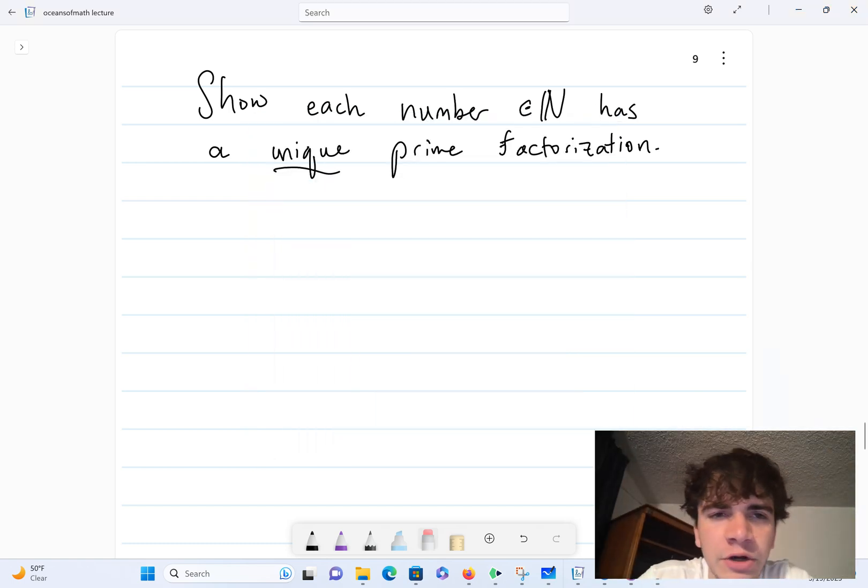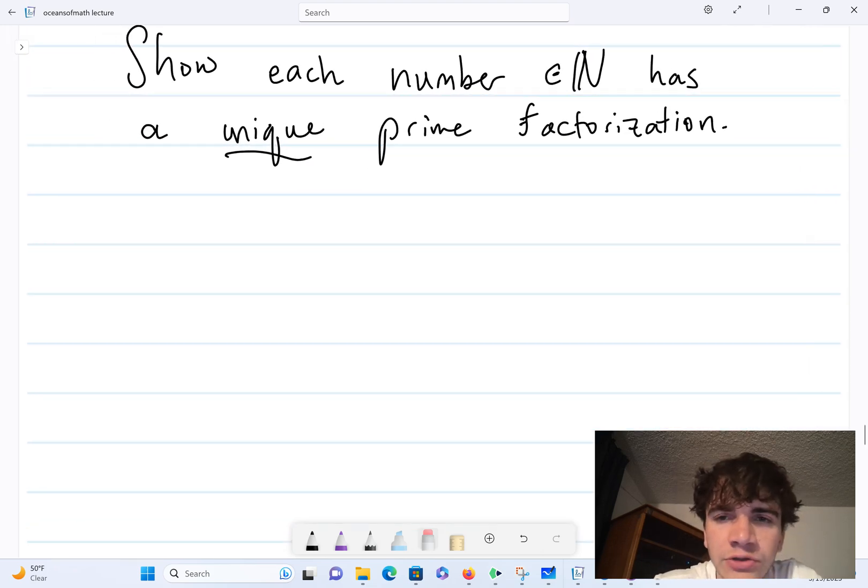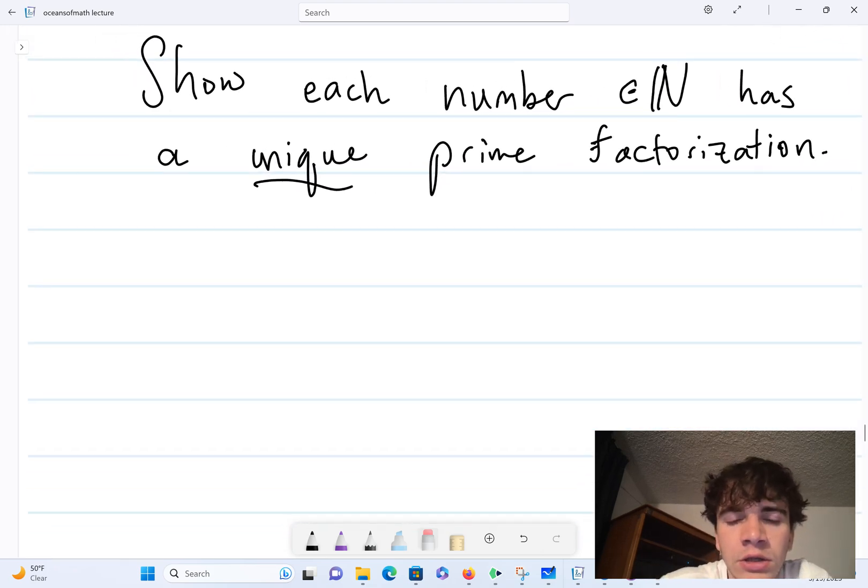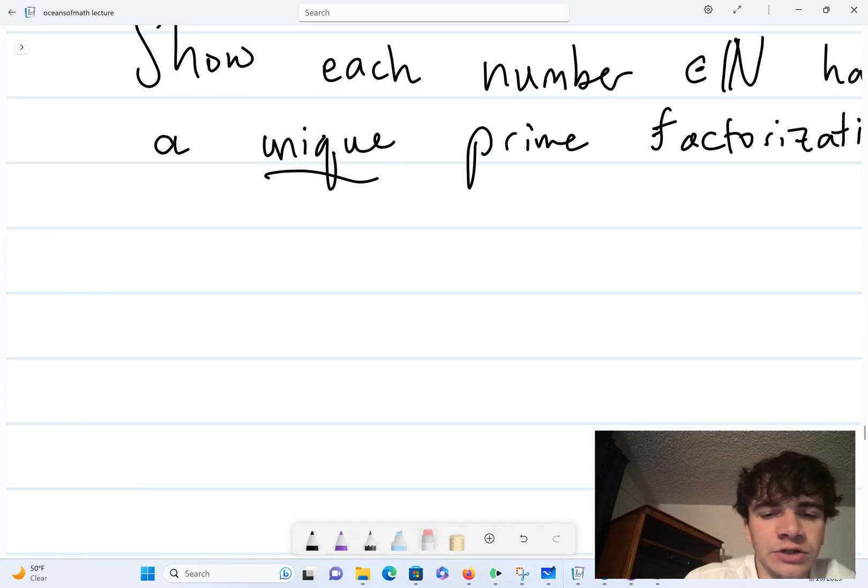Okay, today I'm going to prove possibly the most important theorem in all of mathematics, which states that each number has a unique prime factorization. Of course, we're talking about natural numbers here.